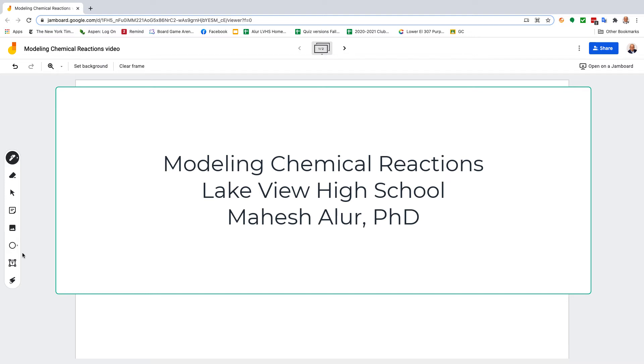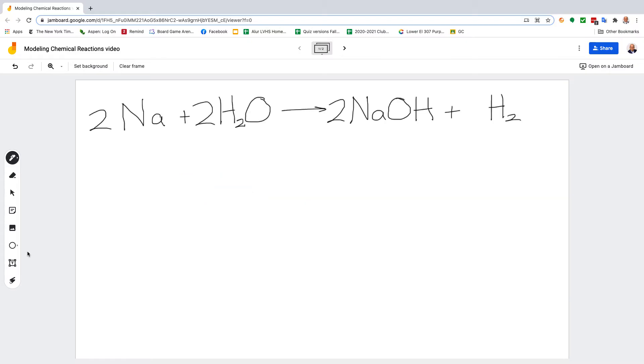Hey everybody, in this video I'm going to show you how to model chemical reactions like we did in class last week. You're going to do some practice and show me that you understand how to do this in a quiz that you can retake until you show mastery. The way we model chemical reactions is to use circles to represent each atom.